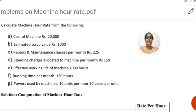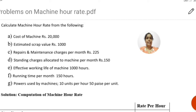Effective working life of machine is 1,000 hours. Running time per month is 150 hours. Power used by machine is 10 units per hour at 55 paise per unit. This is the given information for Problem 1.